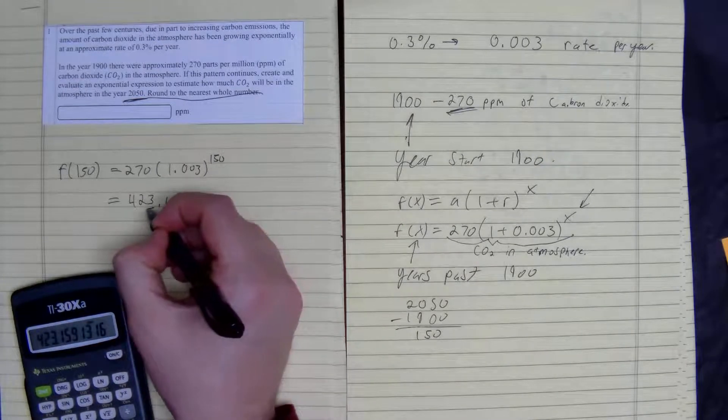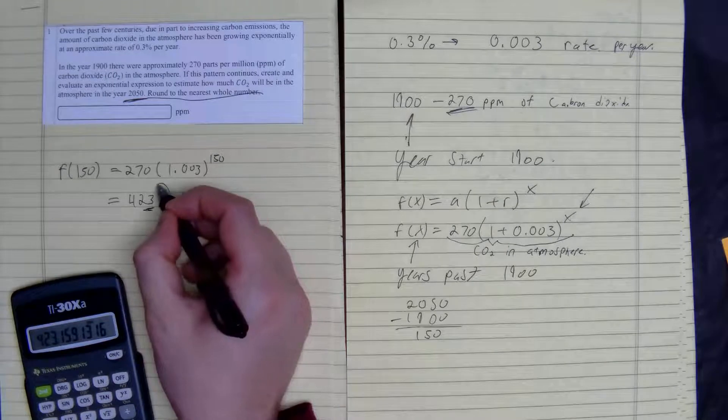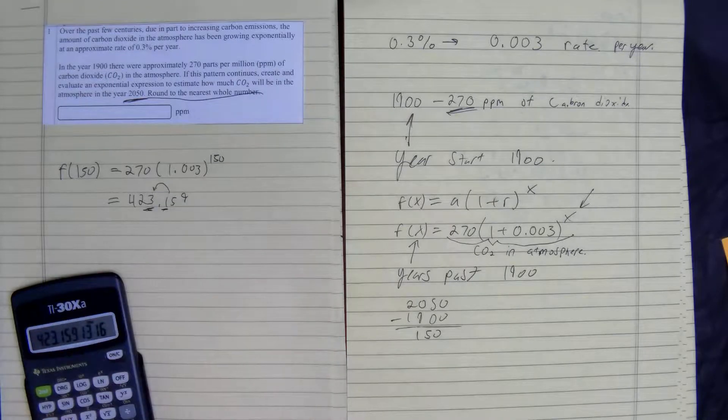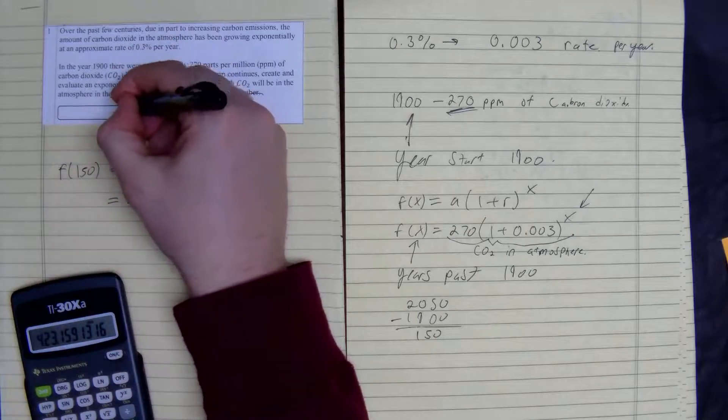They want us to round to the whole number. So that means we look at the tenths place. 1 is lower than the needed value of 5. So our final answer is 423.